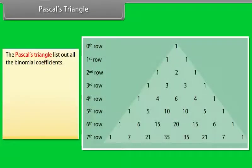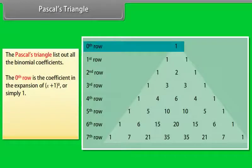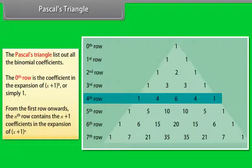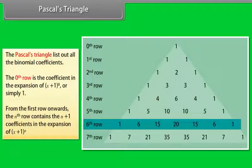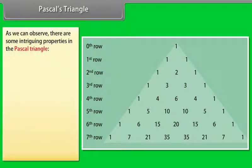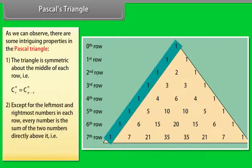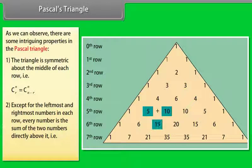Pascal's triangle lists out all the binomial coefficients as shown in the figure. The zeroth row is the coefficient in the expansion of x plus 1 raised to power 0, or simply 1. From the first row onwards, the nth row contains the n plus 1 coefficients in the expansion of x plus 1 raised to power n. As we can observe, there are some intriguing properties in the Pascal's triangle. The triangle is symmetric about the middle of each row. That is, nCr is equal to nC(n minus r).